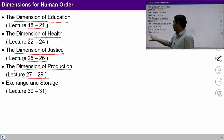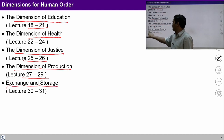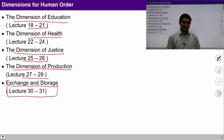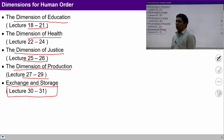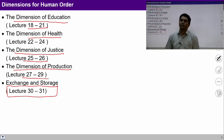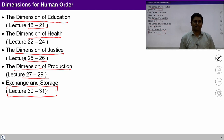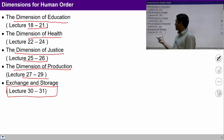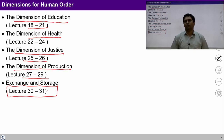In this lecture number 30 and 31 we are going to talk about exchange and storage. Whatever is produced, we are going to study how this exchange and storage is related to physical facilities, what is the importance of this exchange and storage in human order.